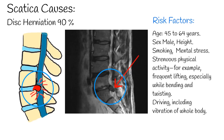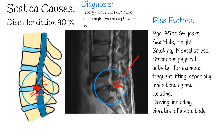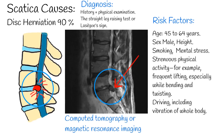Sciatica is mainly diagnosed by history taking and physical examination. Patients mention radiating pain in the leg. The most commonly applied investigation is the straight leg raising test, also known as the Lasègue sign. Patients with sciatica may also have low back pain, but this is usually less severe than the leg pain. Imaging such as CT or MRI can help diagnose lumbar disc herniation.